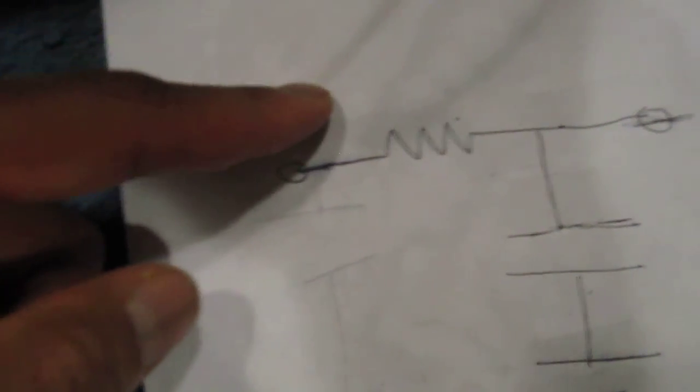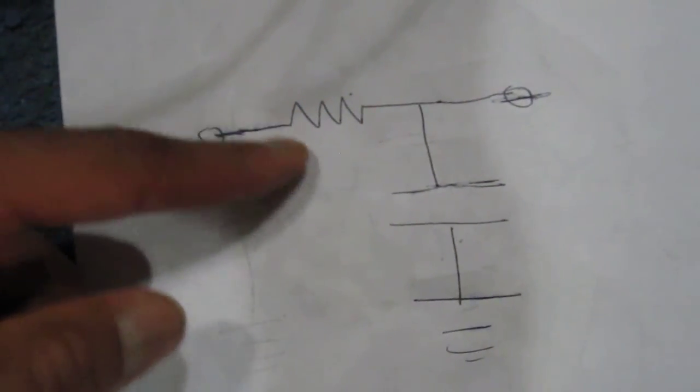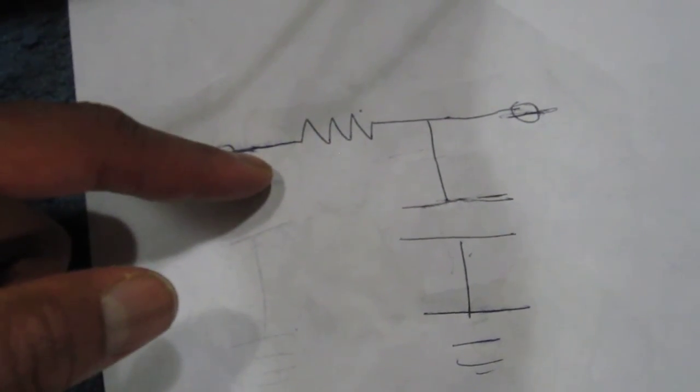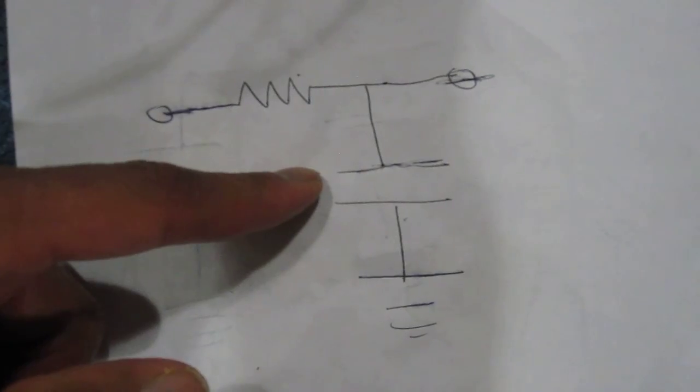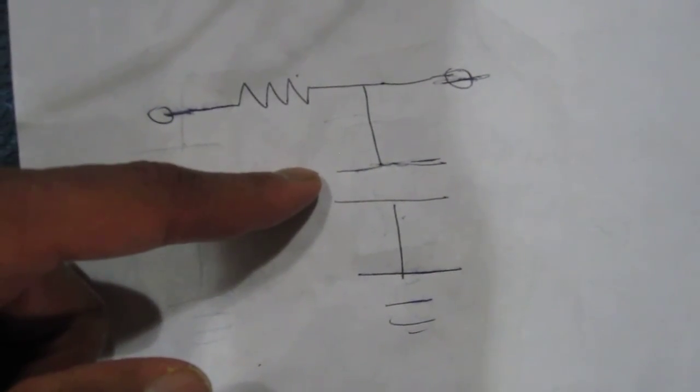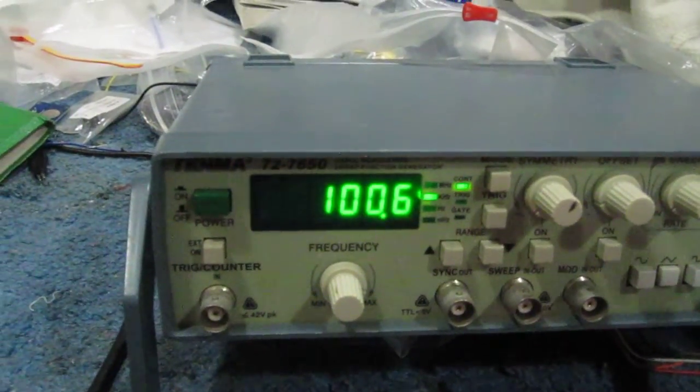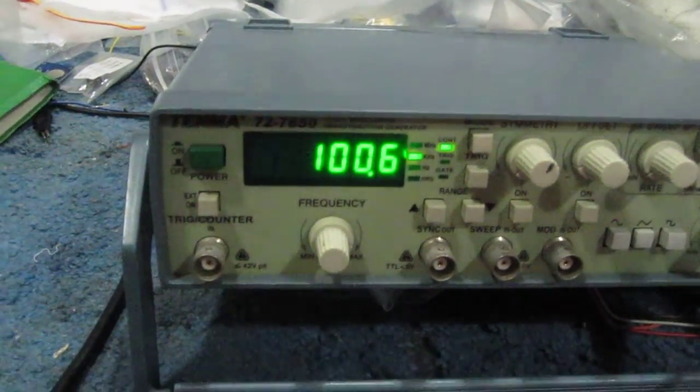This circuit is very basic. It's composed of a single RC network. The resistor value we're using is 1.5 kOhm and the capacitor value is 10 nanofarad. For the frequency of the input signal, we're using just about 100 kHz.